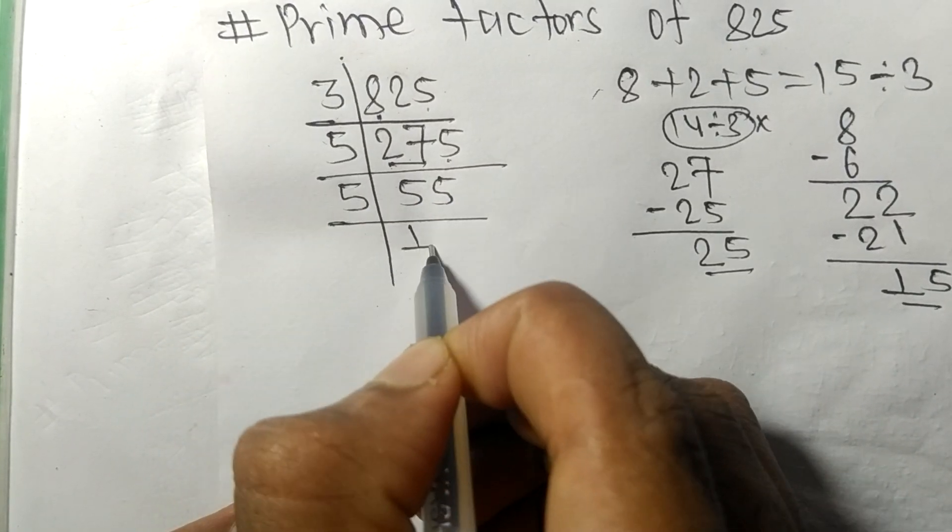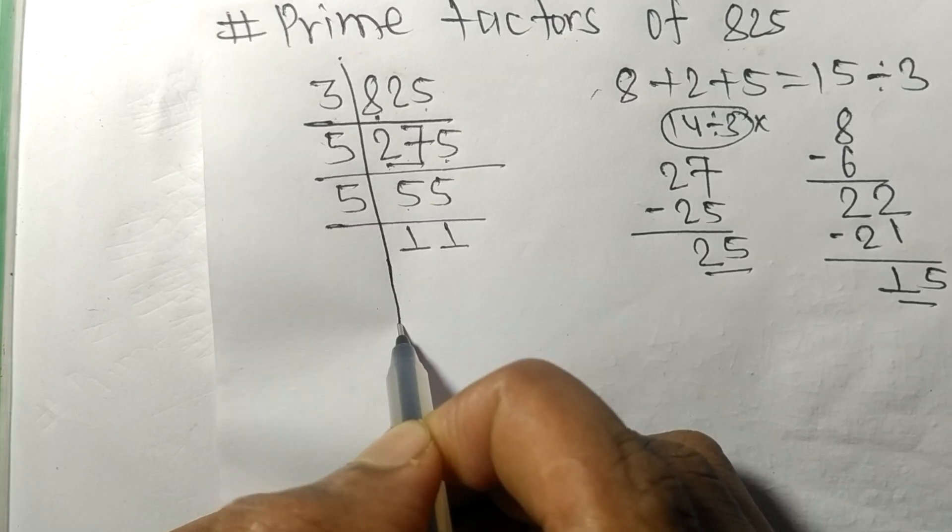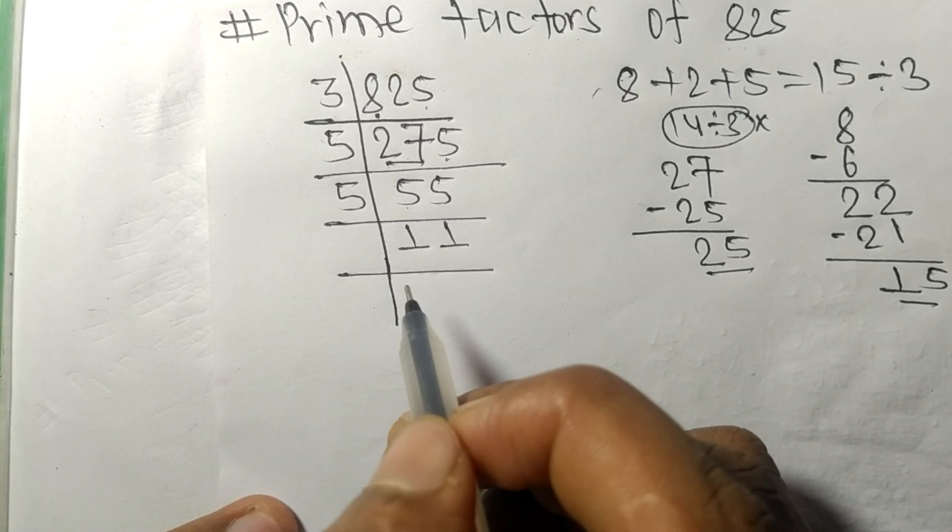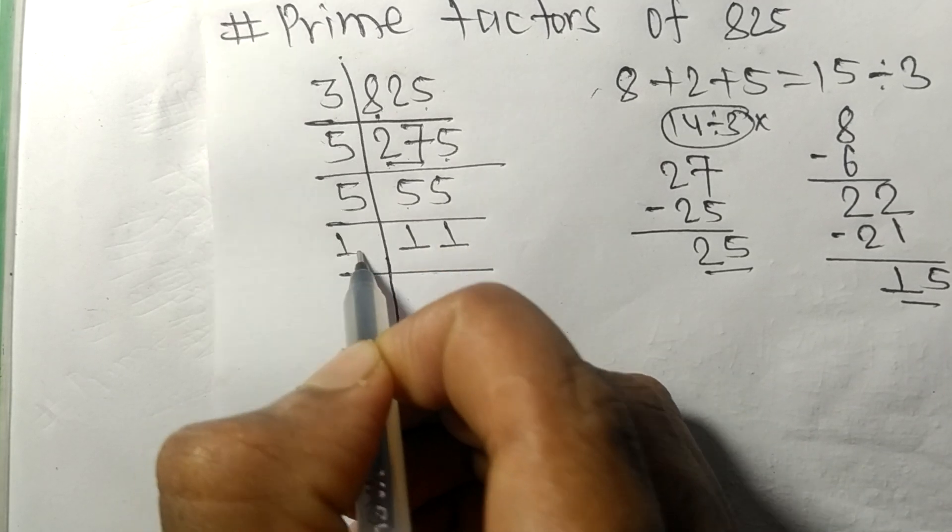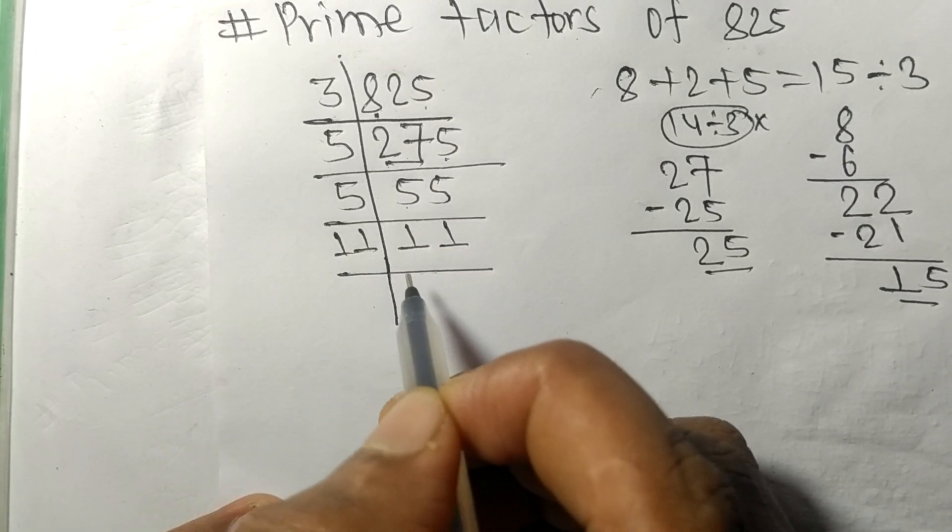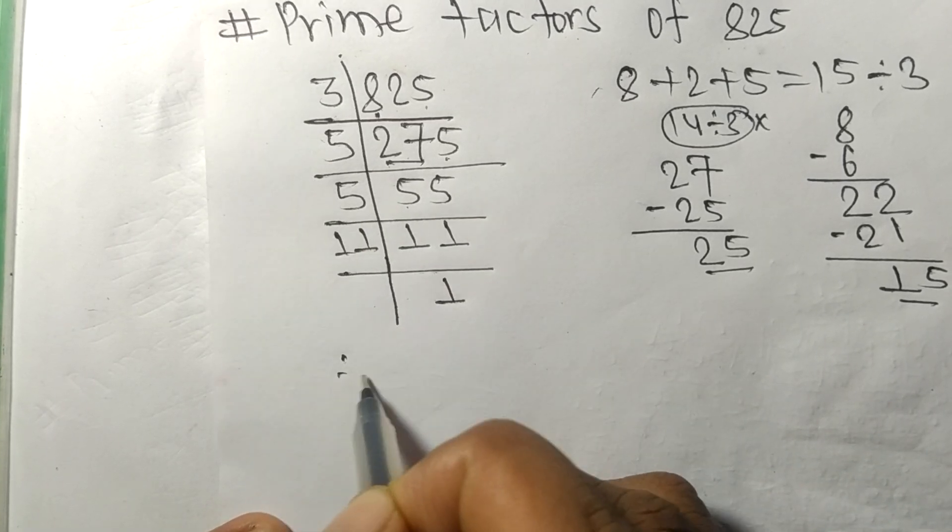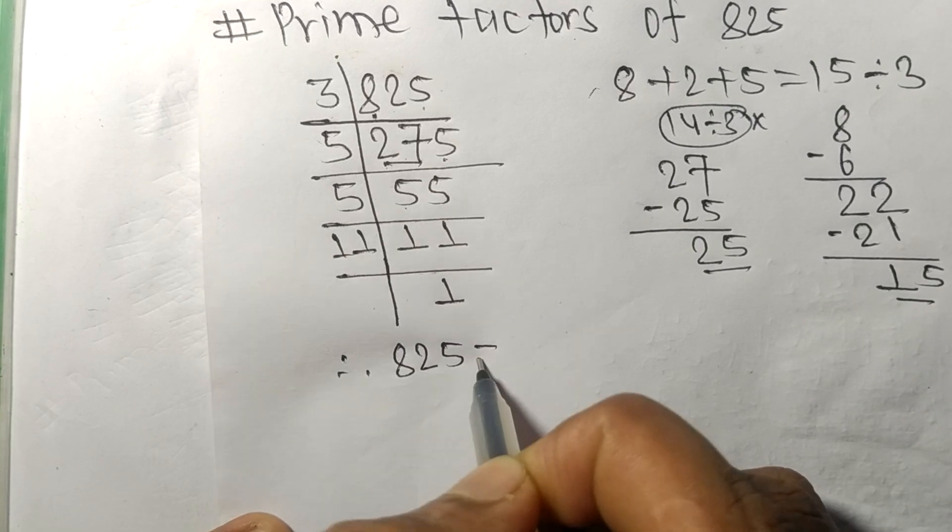5 times 1 is 5, 5 times 1 is 5. Now we got 11 which is a prime number, so it is exactly divisible by 11 only, and on dividing we get 1.